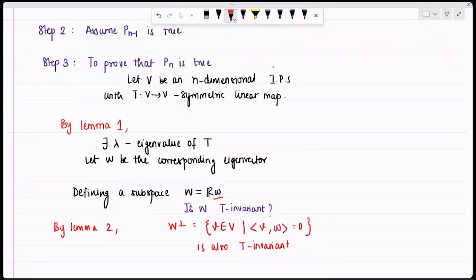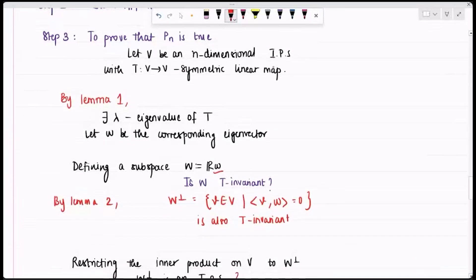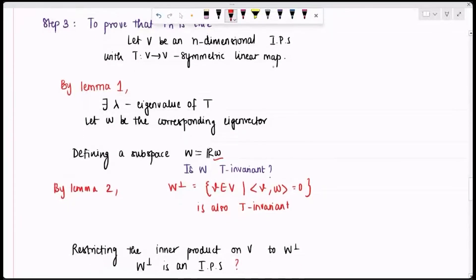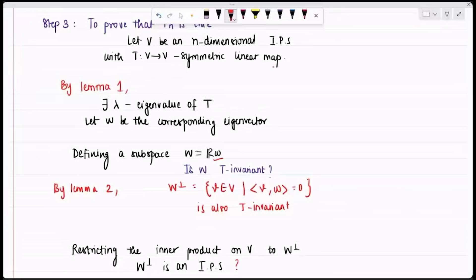I restrict the inner product on V to W⊥. Since W⊥ is a subspace, the zero element exists, it is closed under scalar multiplication and vector addition, and the inner product behaves the same way as on V. Therefore W⊥ is by default an inner product space.